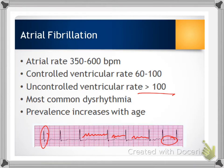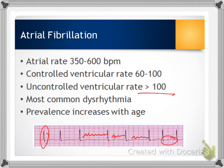Atrial fibrillation is the most common dysrhythmia in patients with heart failure, because the atria are being expanded and stretched over capacity due to fluid overload. When that happens, the atria can no longer function normally and begin quivering. Signs and symptoms of decreased cardiac output may be present, and there is the same complication with risk for thrombi formation. Treatment includes calcium channel blockers and beta blockers. Cardioversion is the treatment of choice, followed by catheter ablation or the maze procedure. If unable to convert to sinus rhythm, long-term anticoagulation such as Coumadin is needed.